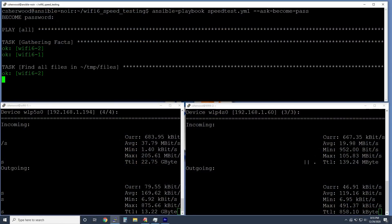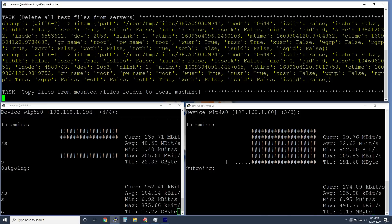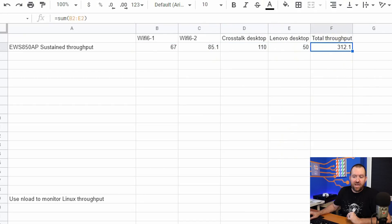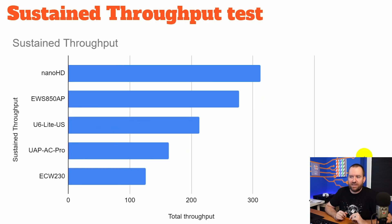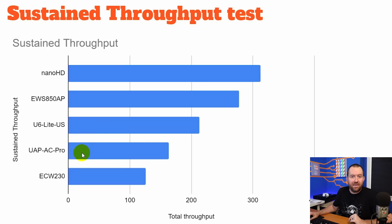The third set of tests were the sustained throughput tests. We fired off a large download simultaneously to all four test clients, waited about two or three minutes for the download to stabilize, then looked at the average speed for those sustained downloads and added up the throughput for all four clients to get our total throughput metric. Surprisingly, the Wi-Fi 5 4x4 multi-user MIMO Nano HD jumped to the head of the pack on this test, getting over 300 megabits per second of sustained throughput. Second place was the Ingenious EWS850AP, followed again by the U6 Lite, then the UAP-AC Pro.